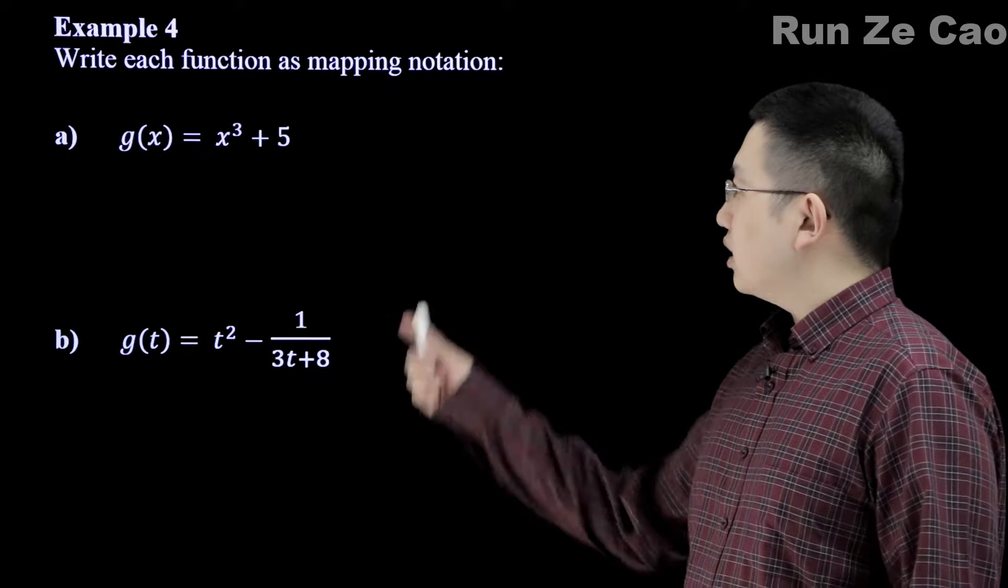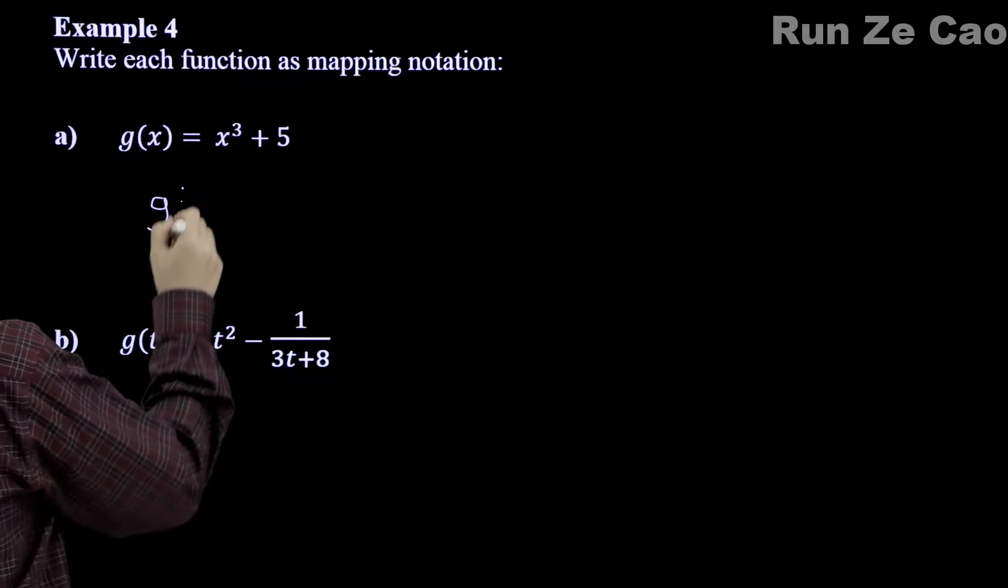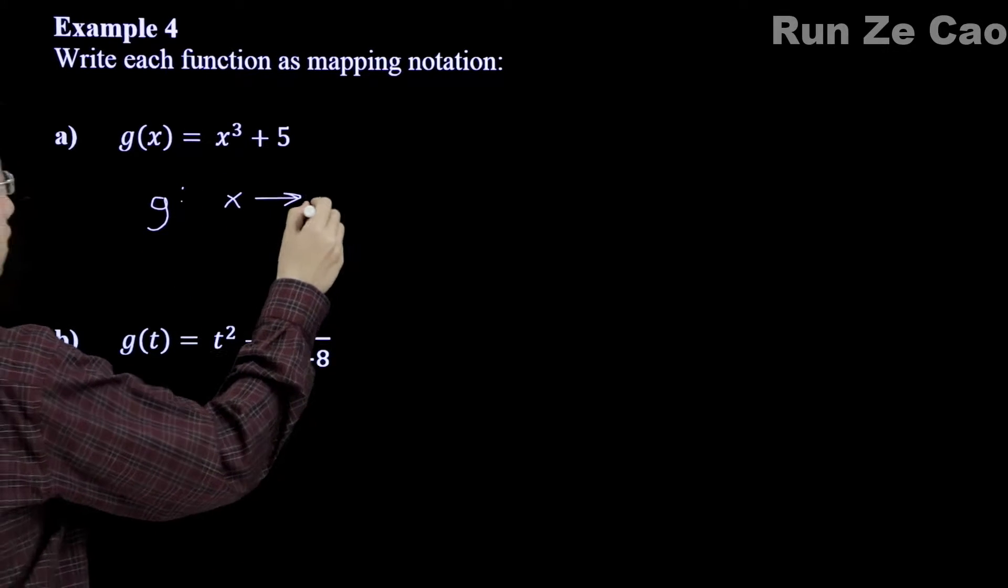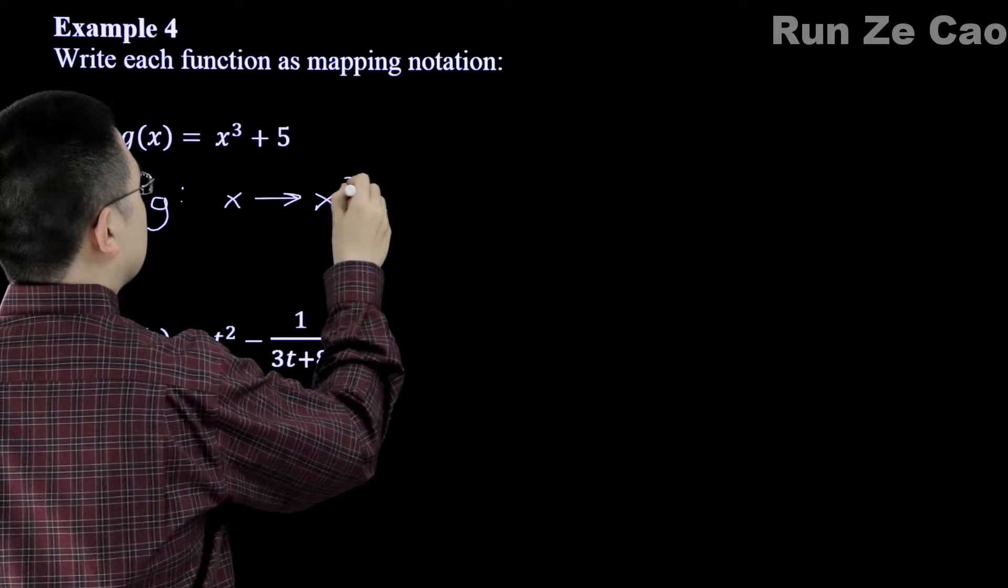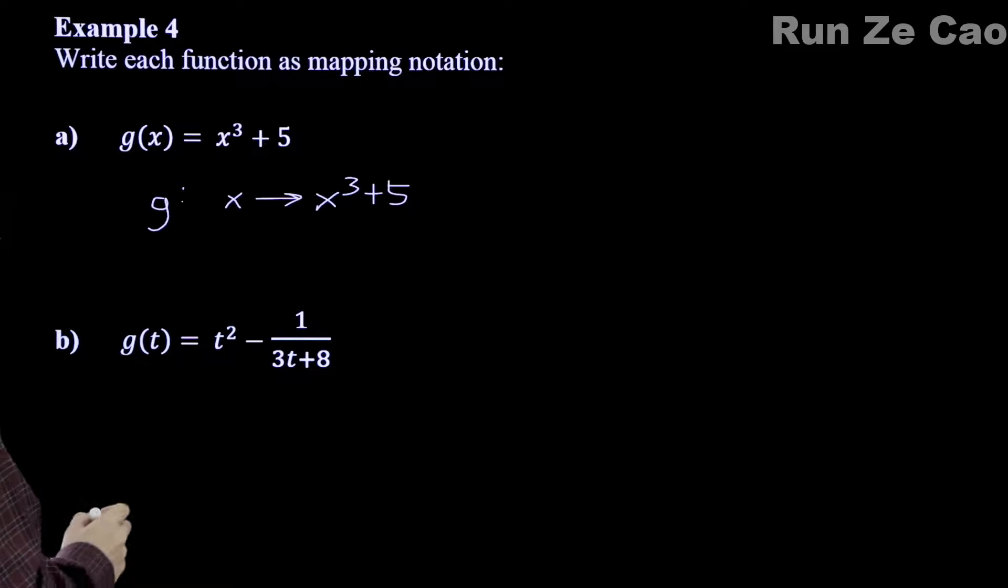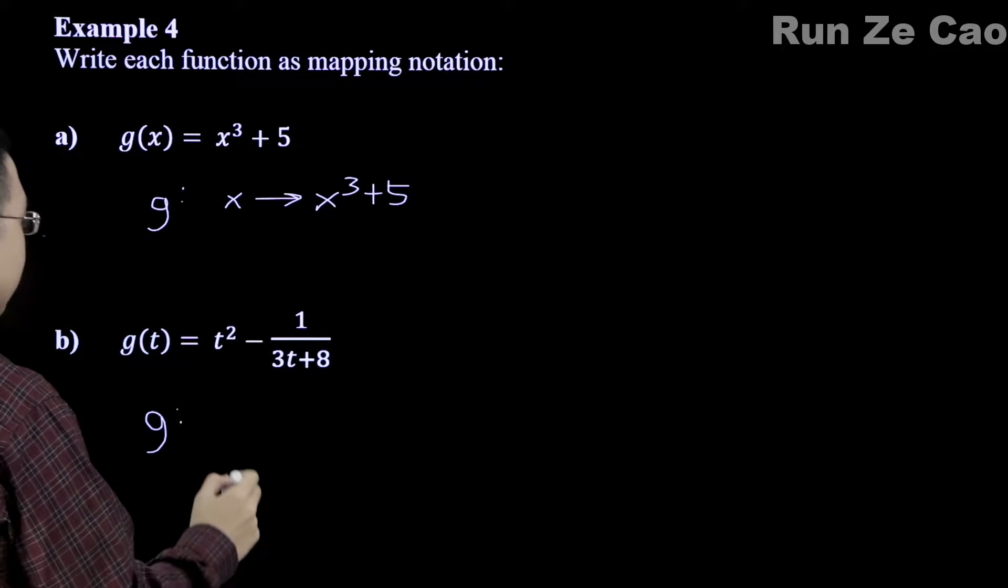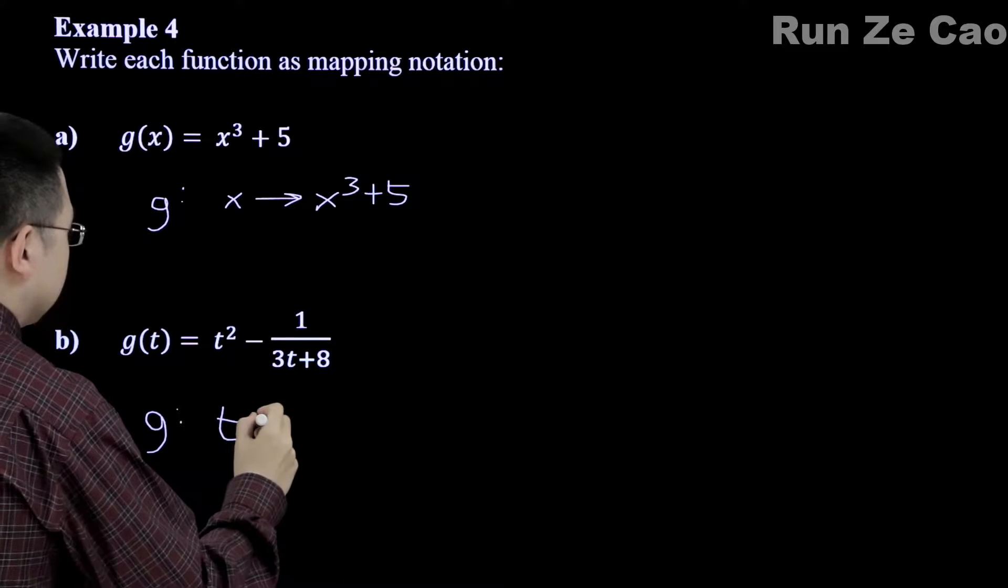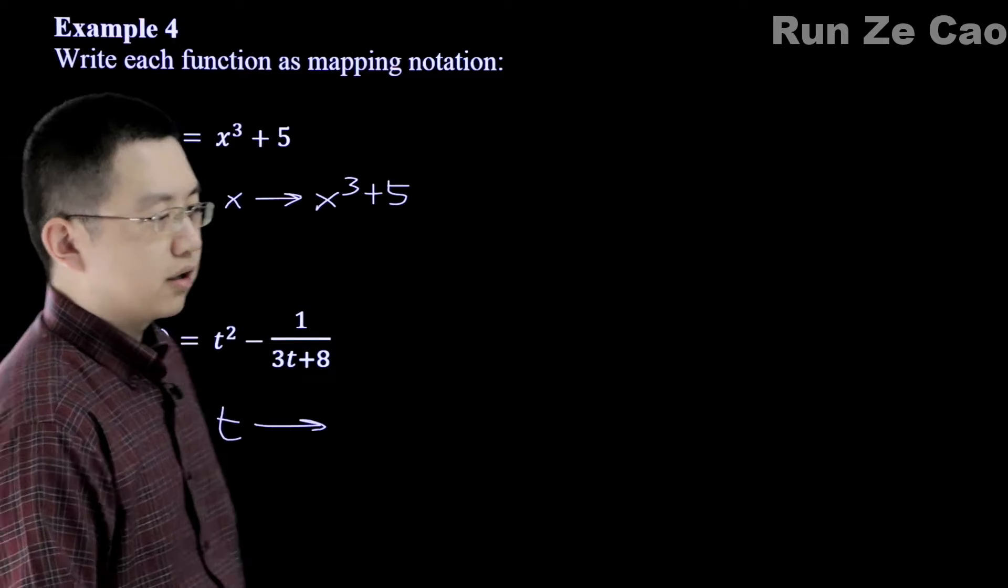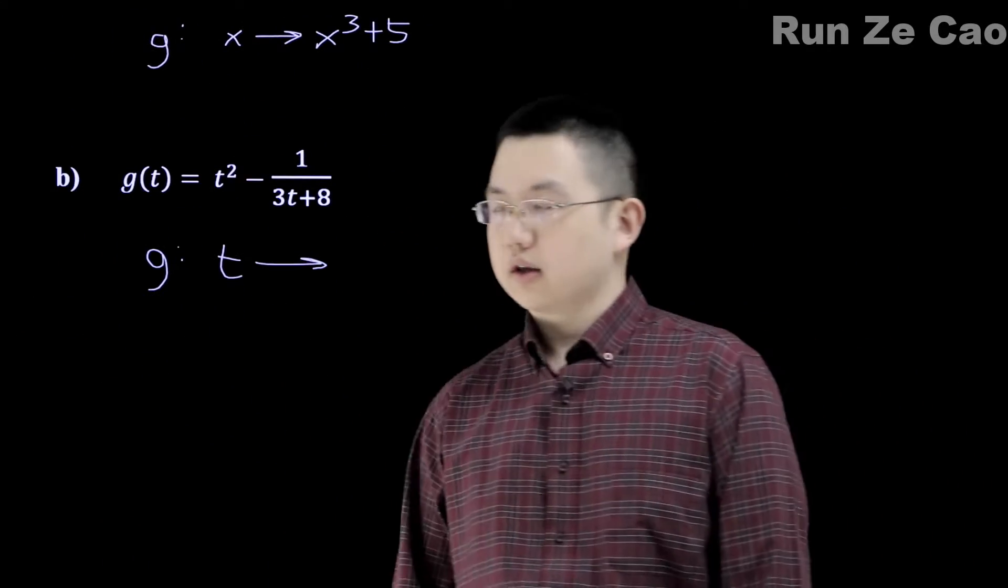So if we write each function as mapping notation, we would have g: x → x³ + 5. Now, for this example down here, we would, of course, also have this. I think you can probably hear the parts that I'm not saying about my opinion of this system of doing things.